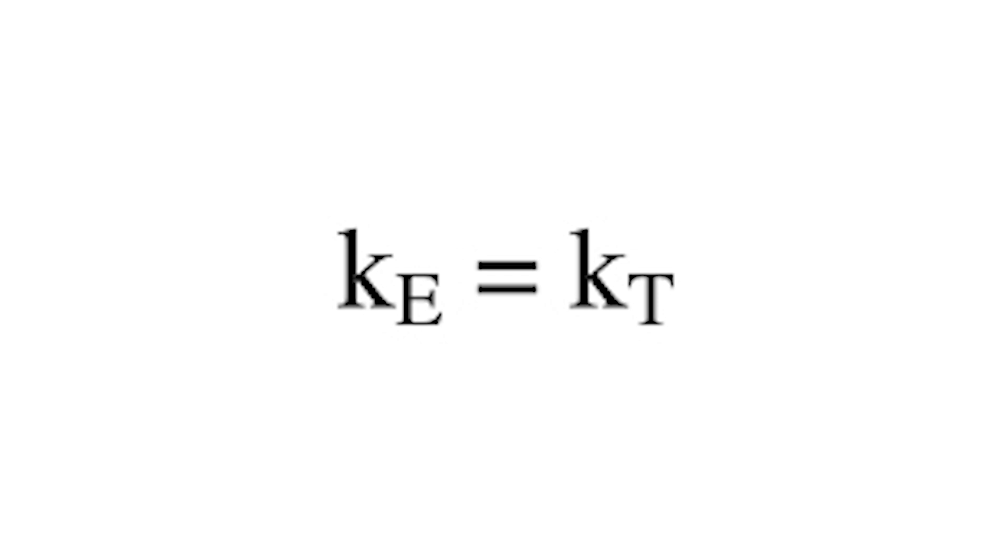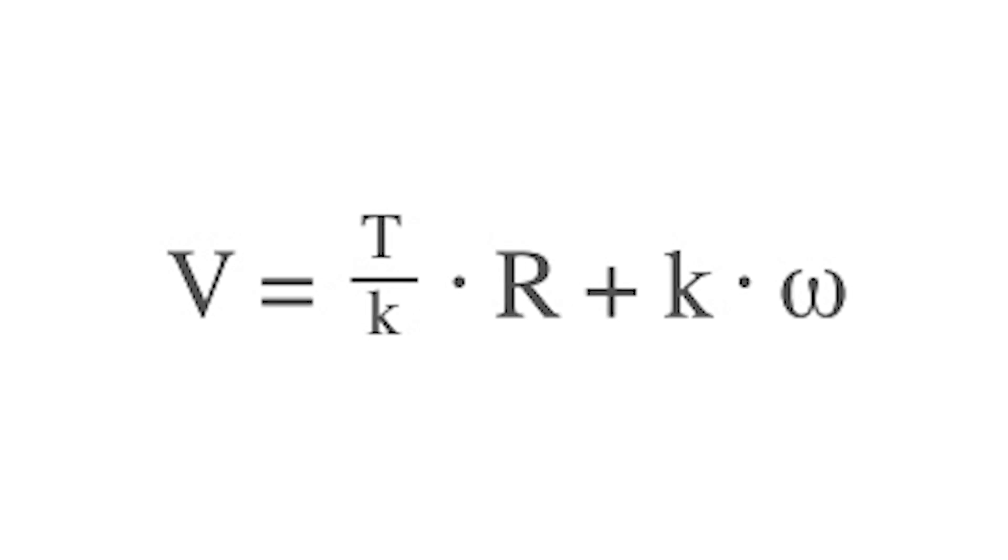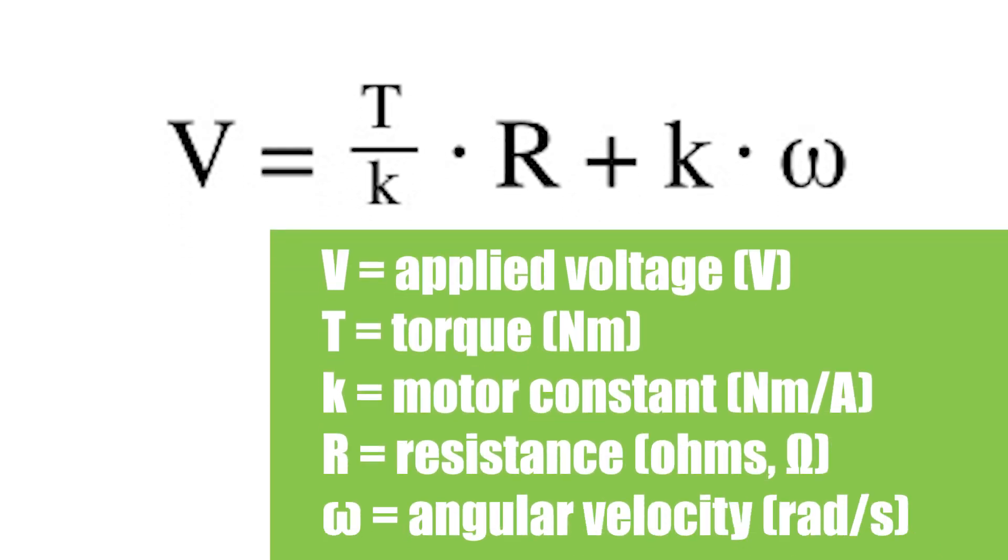Of course, the motor constant, k, doesn't change, and the resistance in the motor windings can be assumed to be constant. So you can see from the equation that if voltage is constant, torque and speed are inversely related.